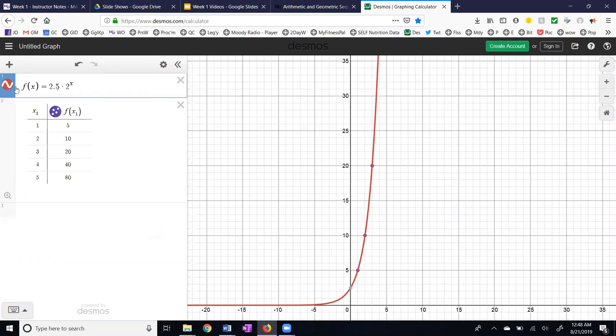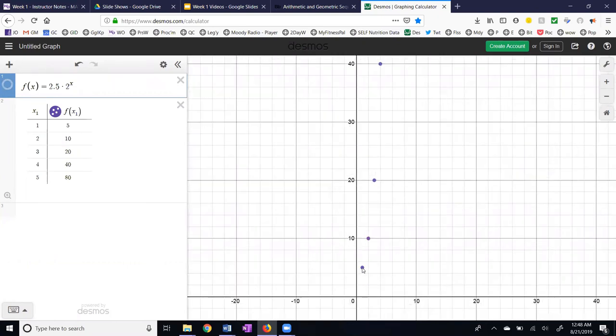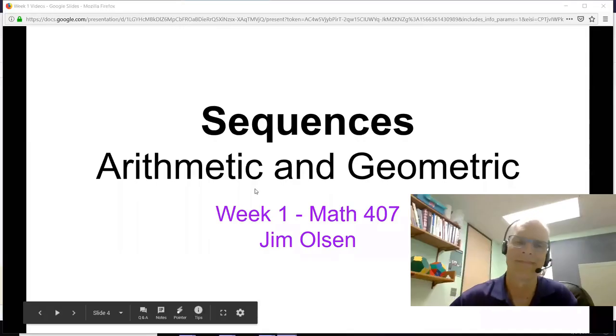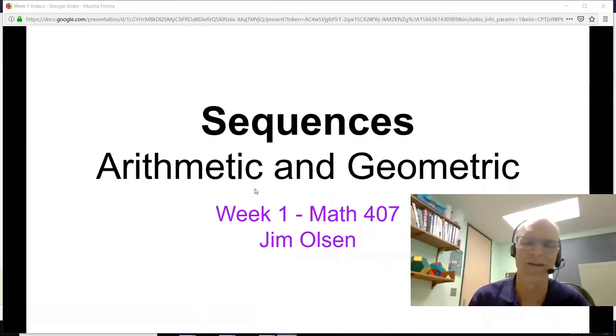And I can take away the curve and so we have 1 comma 5, 2 comma 10, 3 comma 20, 4 comma 40 doubling each time. I hope you found this video useful. Have a great day!